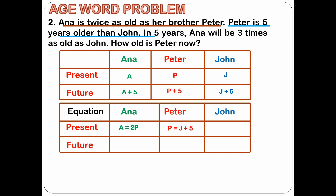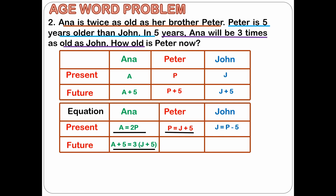Since Peter is 5 years older than John, we can say also that John is 5 years younger than Peter, so J is equal to P minus 5. Now we will write the equation for the future. In 5 years, Anna is 3 times as old as John, so A plus 5 is equal to 3 times J plus 5. From the problem we identify 3 equations and we have 3 variables. Whenever you have 3 unknown variables, you need 3 equations to solve for those 3 variables.